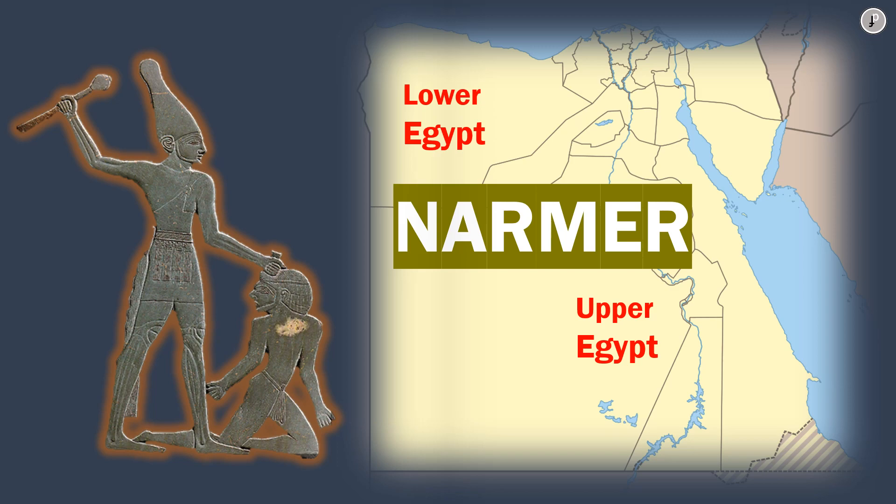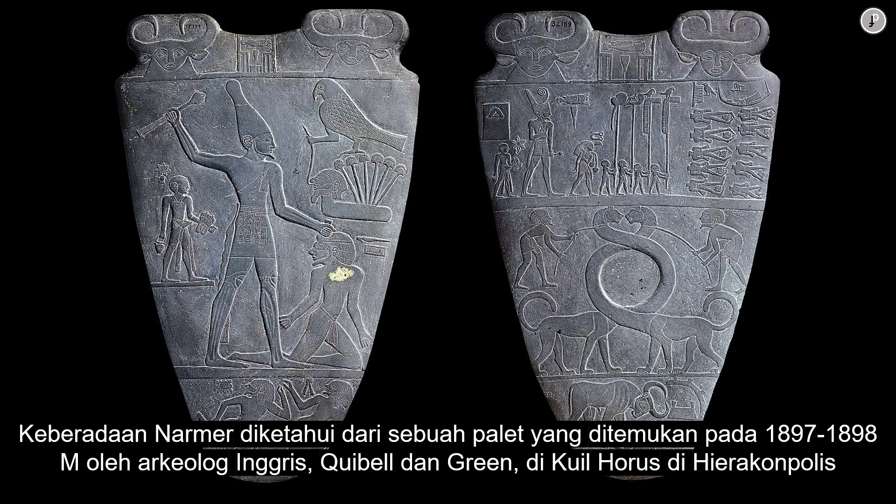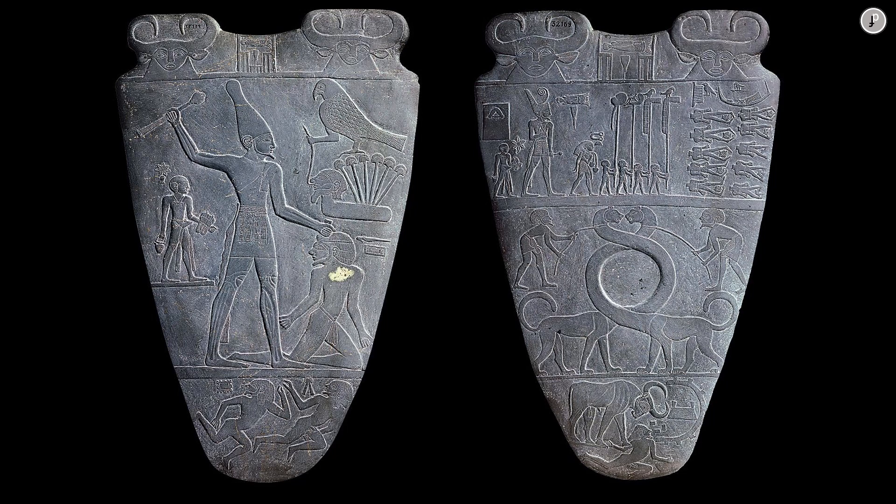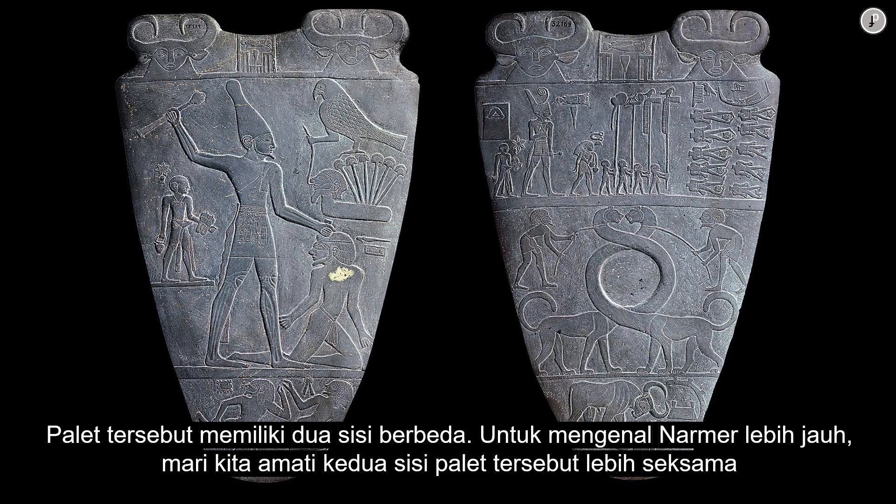Narmer's existence is known from a palette discovered in 1897–1898 AD by British archaeologists Quibell and Green at the Temple of Horus in Hierakonpolis. The palette has two different sides. To learn more about Narmer, let's see both sides of the palette more closely.